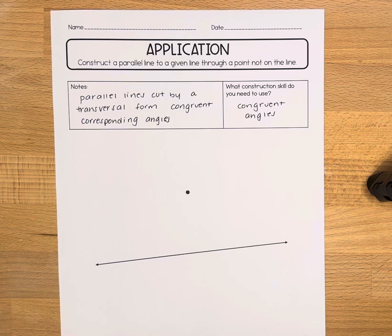So the main note we're going to use here is that parallel lines that are cut by a transversal form congruent corresponding angles.